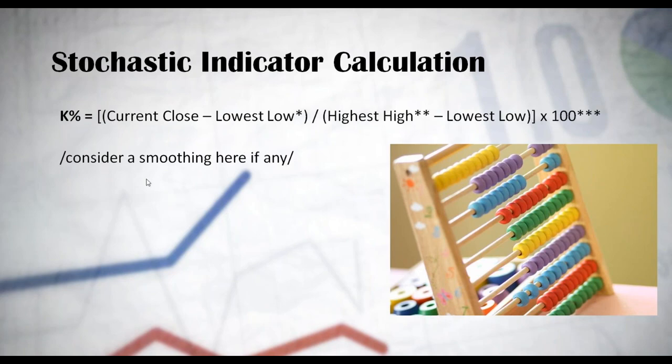It equals: take a look at this - current close minus lowest close, the result of this you divide it by the highest high minus the lowest low, multiply all of this by 100, and this is for the respective period that is taken into consideration. Also notice that this is a standard K line. If there is a smoothing or a slow down, you should be taking it into consideration and adding it to this formula if there is any.